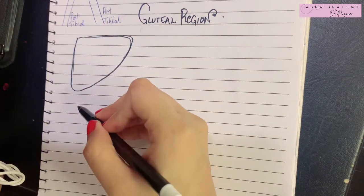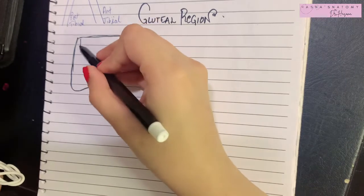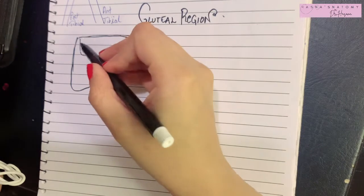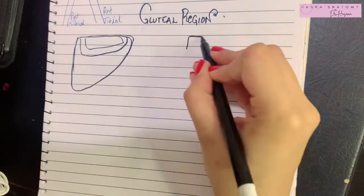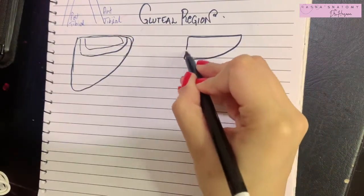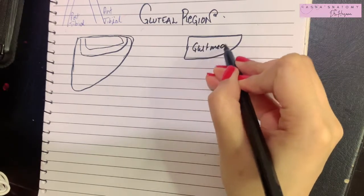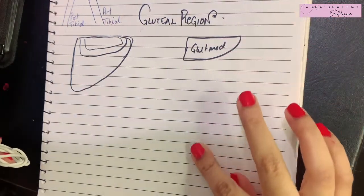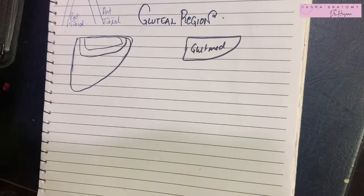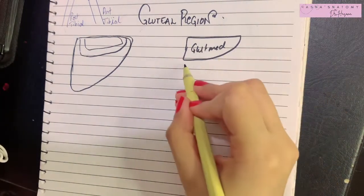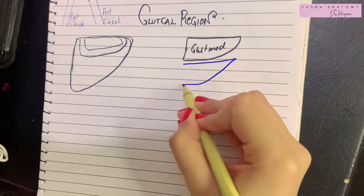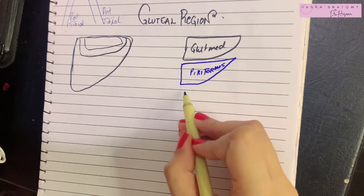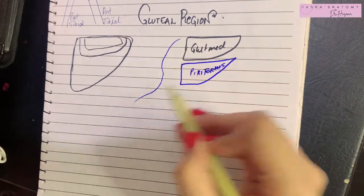Lying deep to the gluteus maximus is your gluteus medius, and lying deep to even the gluteus medius is the gluteus minimus. If we consider the layer of the gluteus medius — suppose we've removed the gluteus maximus out of the way — the order of arrangement of muscles from above downwards is: after the gluteus medius comes your piriformis muscle. We've already talked about how the sciatic nerve passes right below the piriformis.